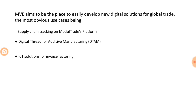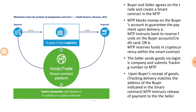ModulTrade also has supply chain tracking on its platform, helping track shipments integrated with blockchain. There's a digital thread for additive manufacturing, which is an interesting but not core aspect of the product. They're also going to provide IoT solutions for invoice factoring — a way in which one company finances the working capital of another company on the basis of live receivables or invoices generated.